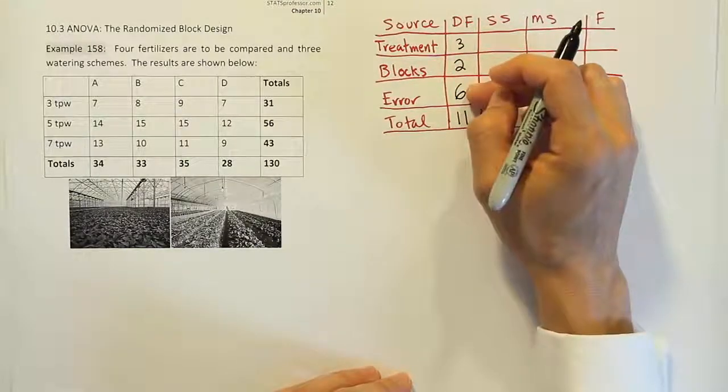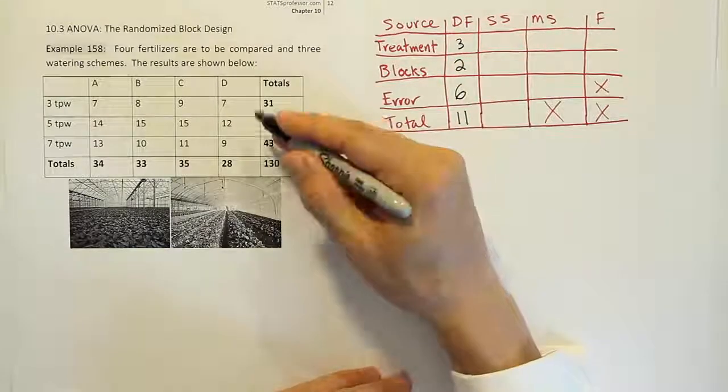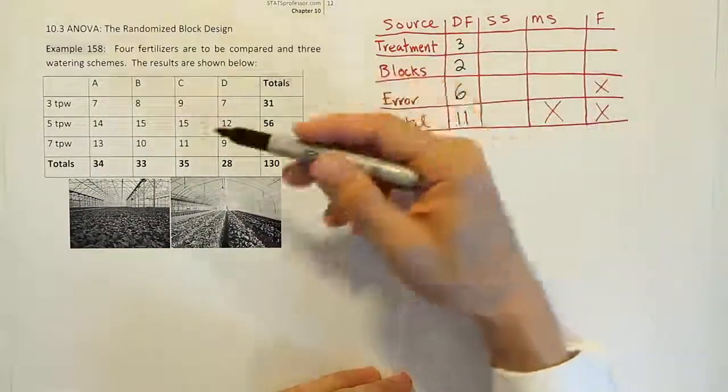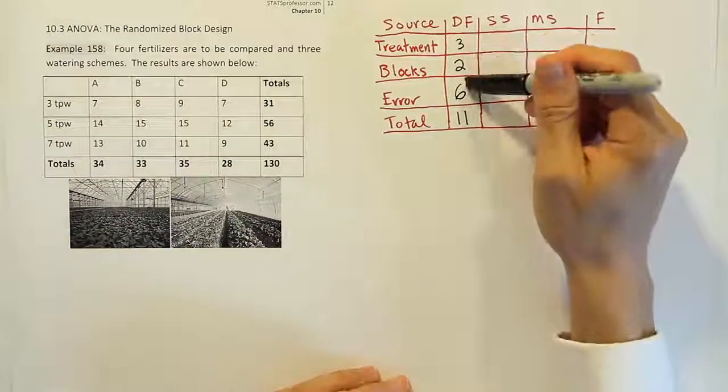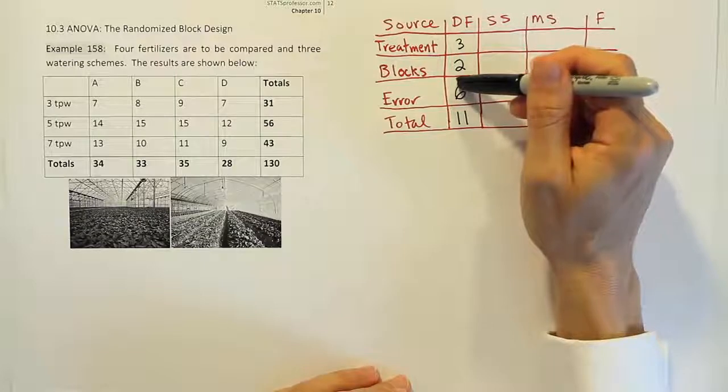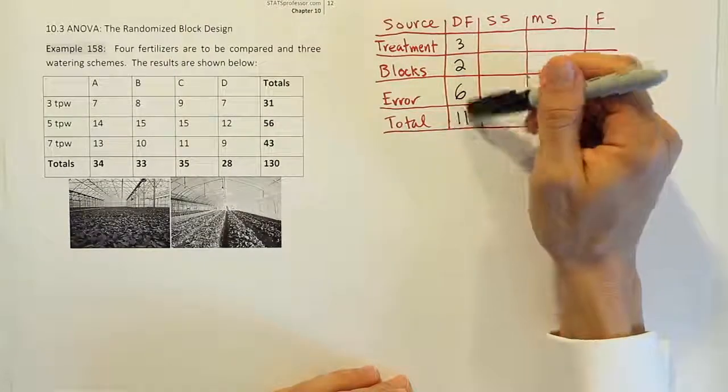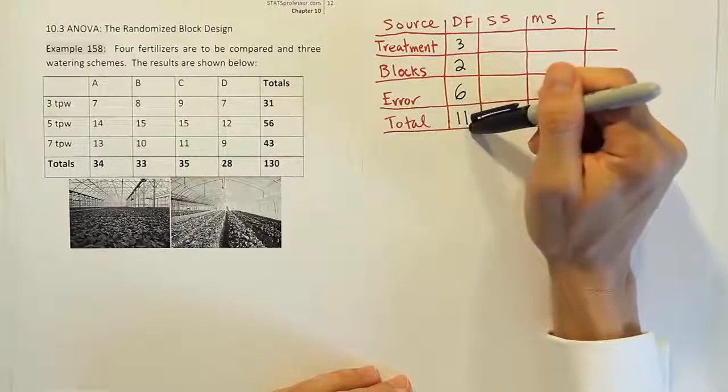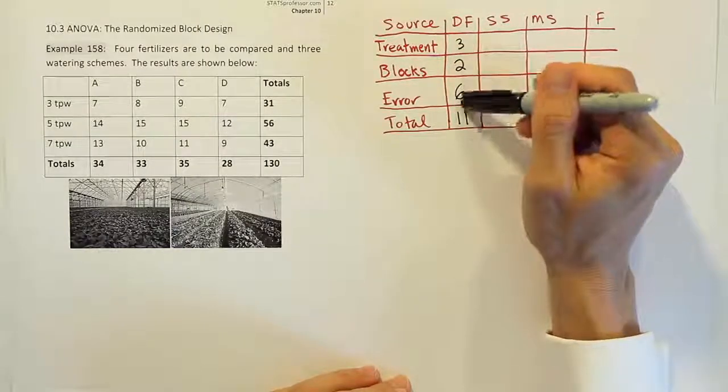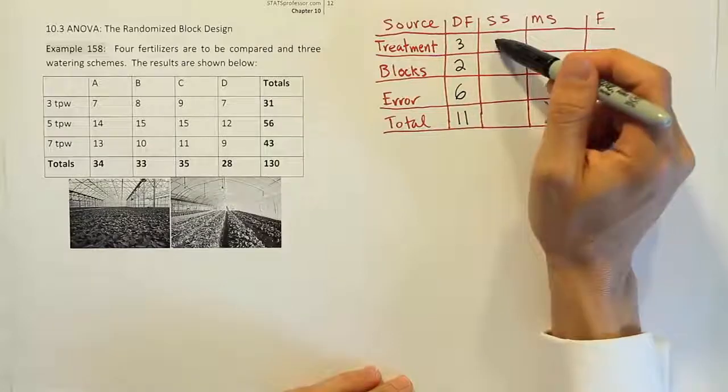So 5 plus 6 must be 11, and that's how we get the error degrees of freedom most efficiently. If you want to use the formula for it, you have to take the total sample size 12 and subtract off the number of treatments and blocks, and you end up with the error. It's just easier to think of it as treatments minus 1, blocks minus 1, the total number of values minus 1, and then error must be the value missing to add up to 11.